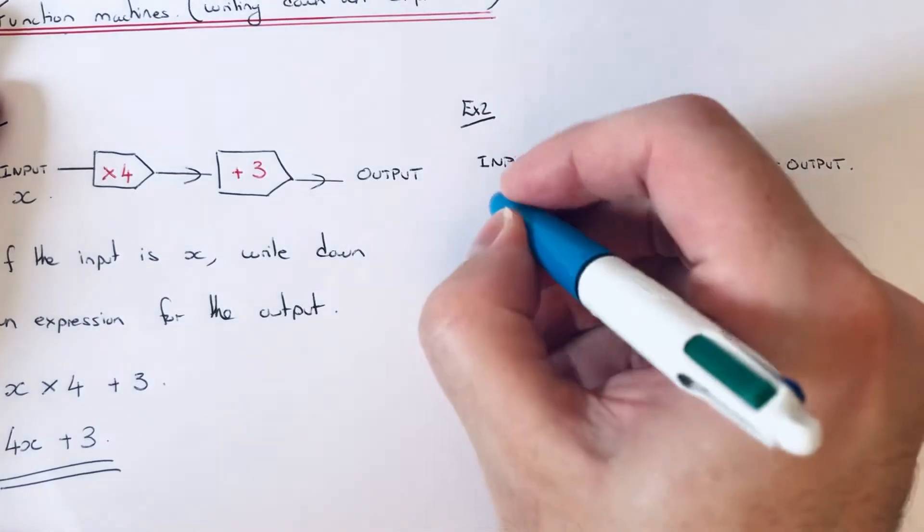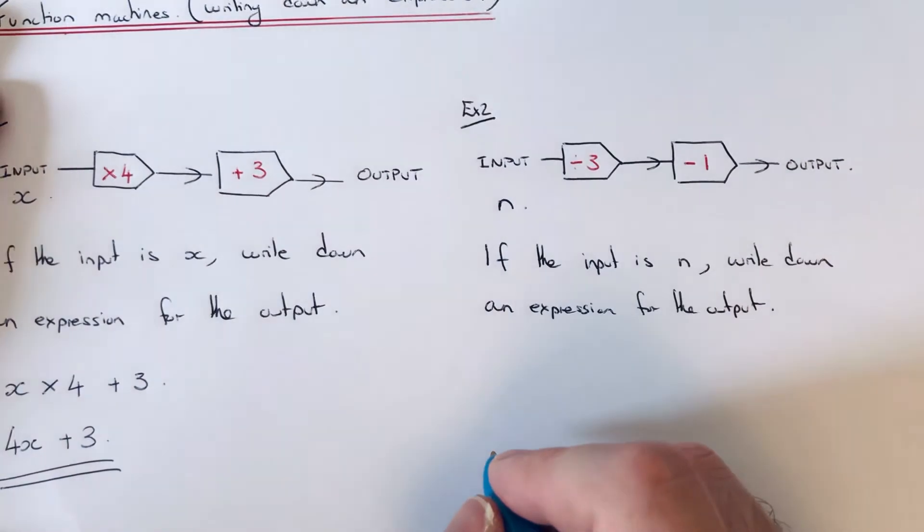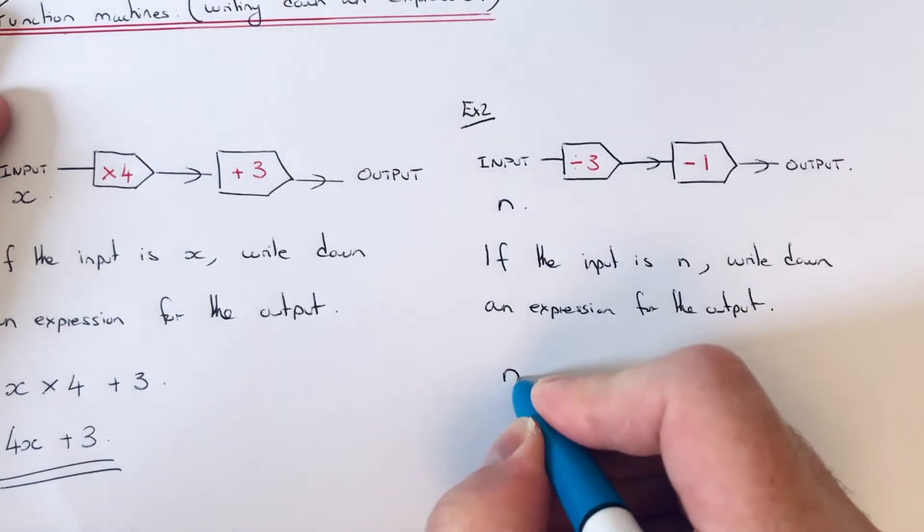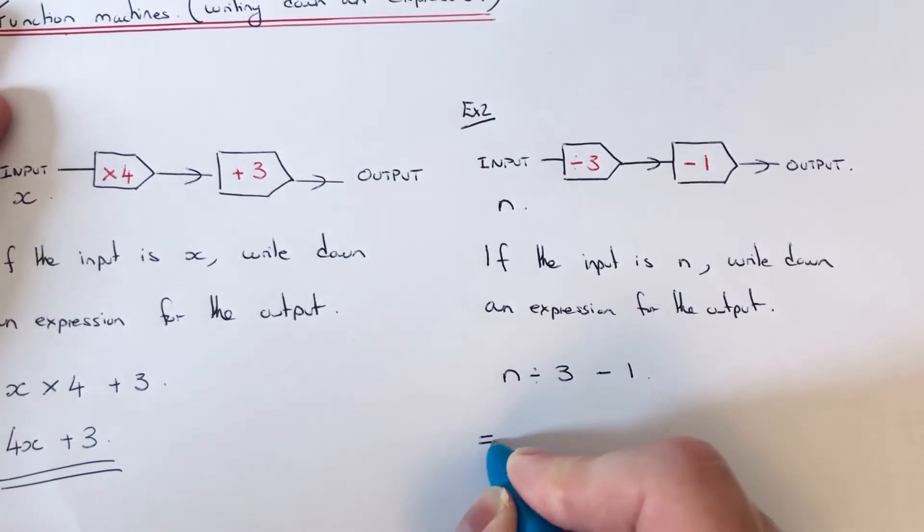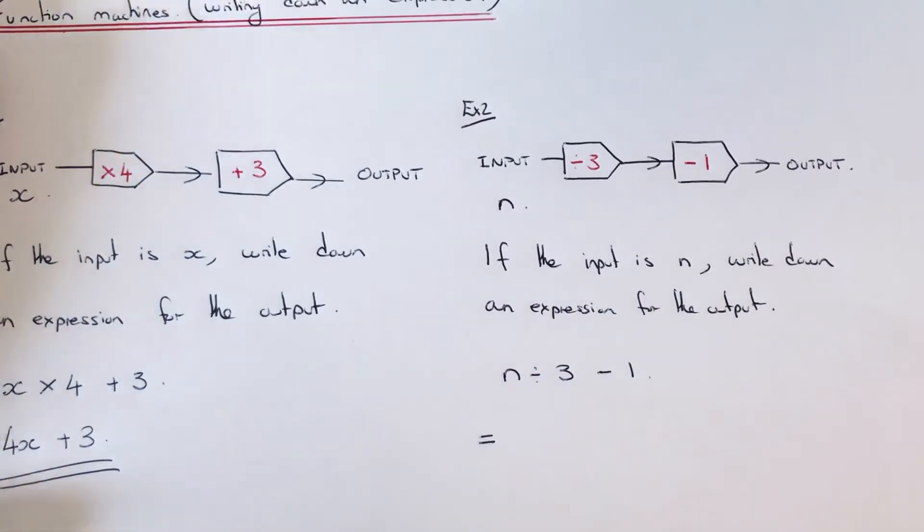So we put in n as our input. We're dividing that by 3, and then we take away 1. So again, we just need to simplify this. We've got to think about how to write it down in algebra.